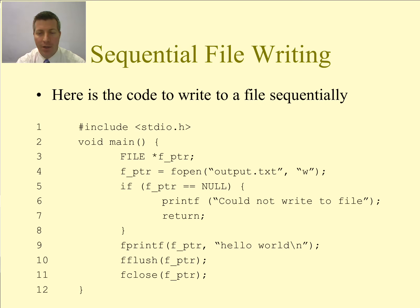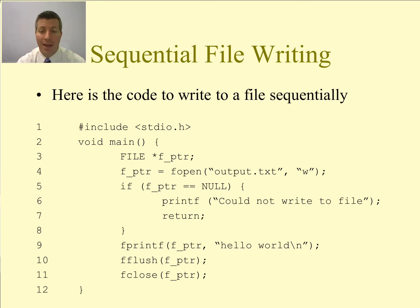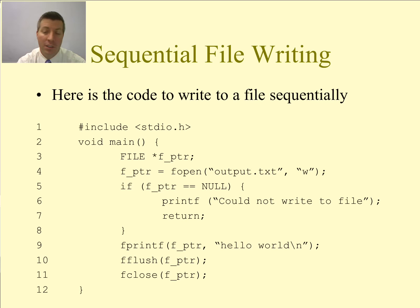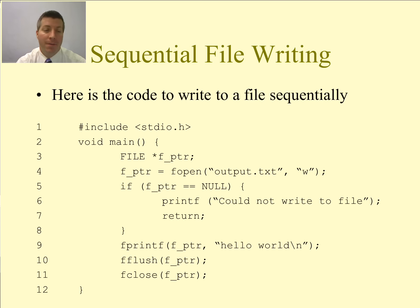Here is how we can write to a file sequentially. The reason I jump right into code — I have two reasons. First, I think we are far enough along in our programming lives that we can look at code and figure out what is going on. We understand functions, variables, pointers, and conditional statements. Second, file I/O has a very strong analogy to the same way that we do input and output from the screen.